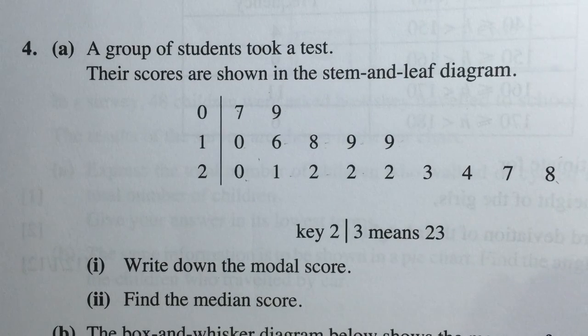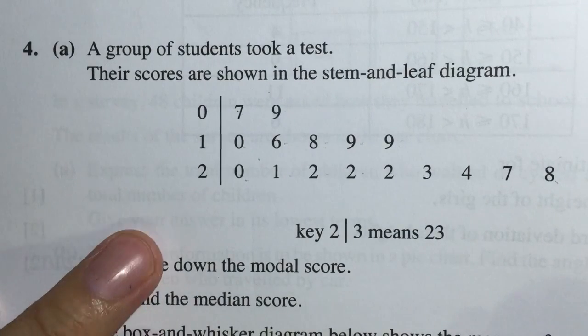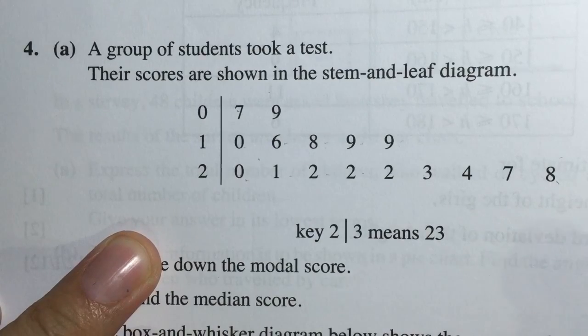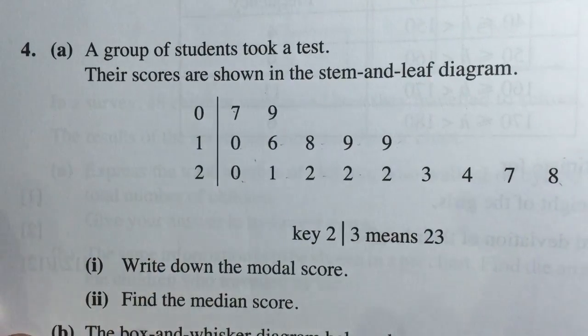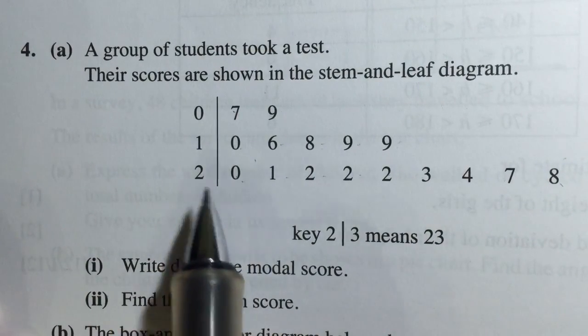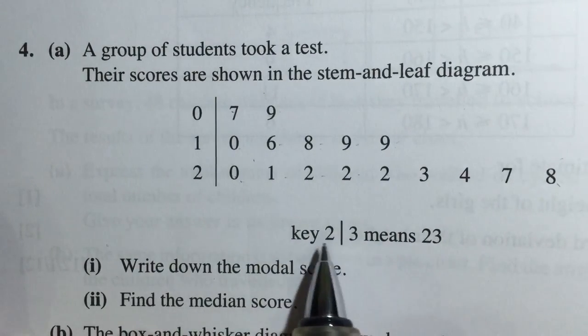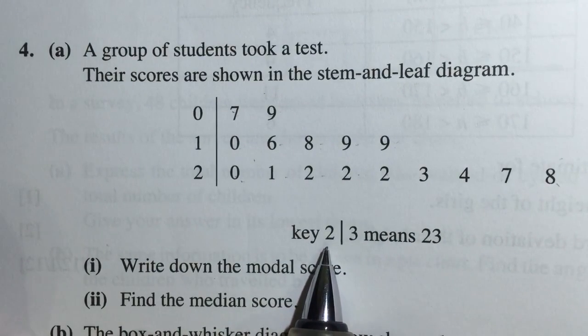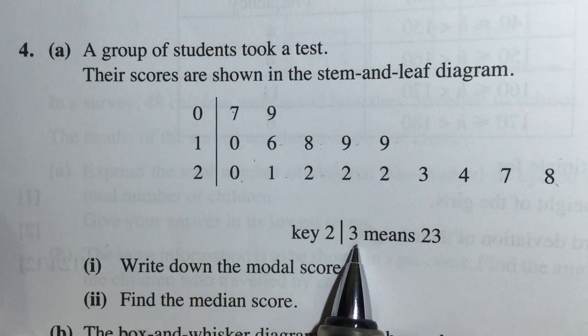Today we're going to review some statistics questions. In this first case we have a stem-and-leaf diagram. Now a stem-and-leaf is made in such a way that you have the stem and the leaf. In this case, the stem is representing the tens and the leaf is representing the units.